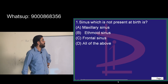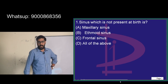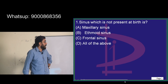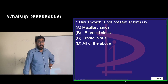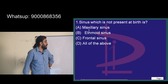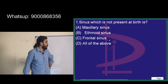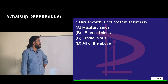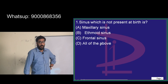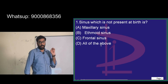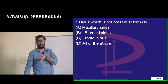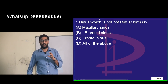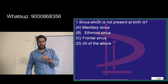The first question: which sinus is not present at birth? Options are maxillary, ethmoidal, frontal, and all of the above. A helpful mnemonic: 'F goes for 4 but not 4' — F equals 6. 'S goes for 6 but not 6' — S equals 4.